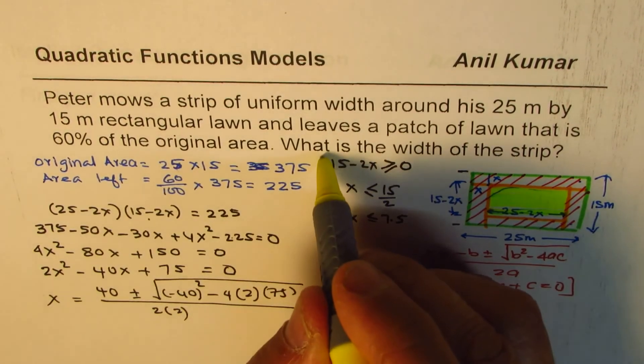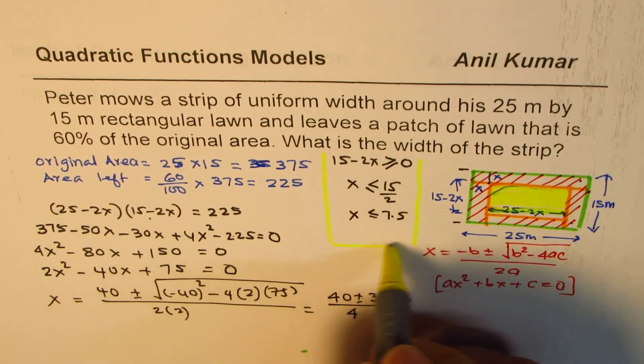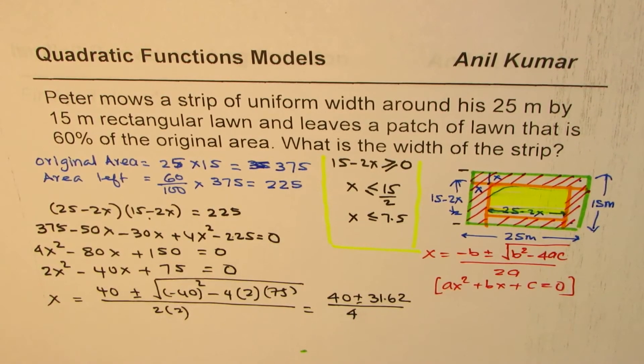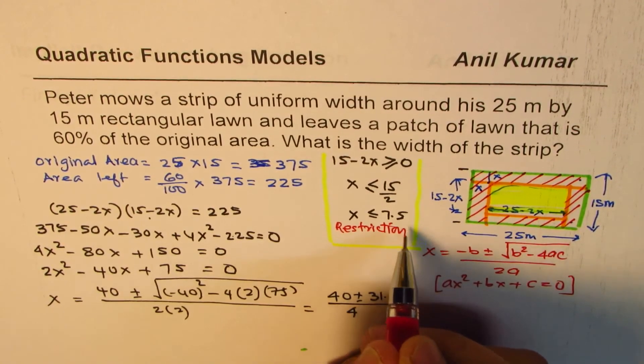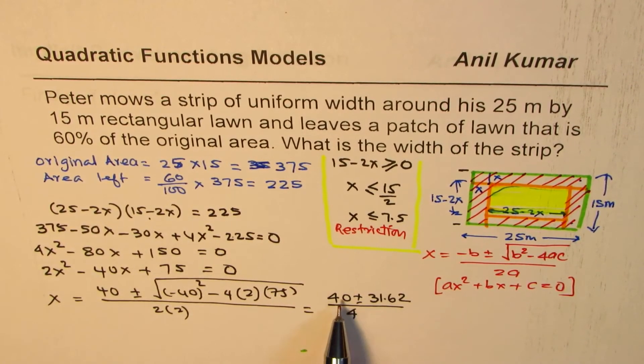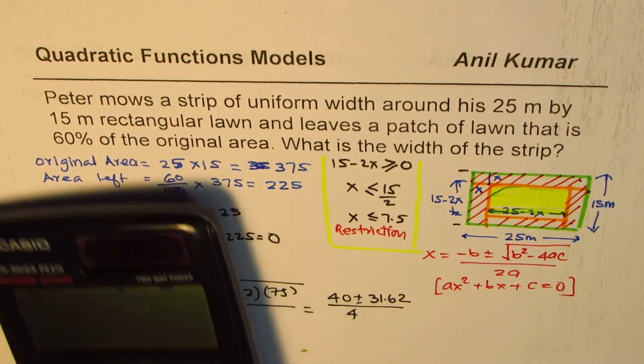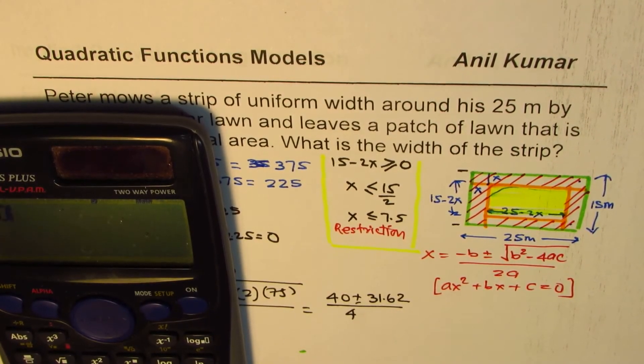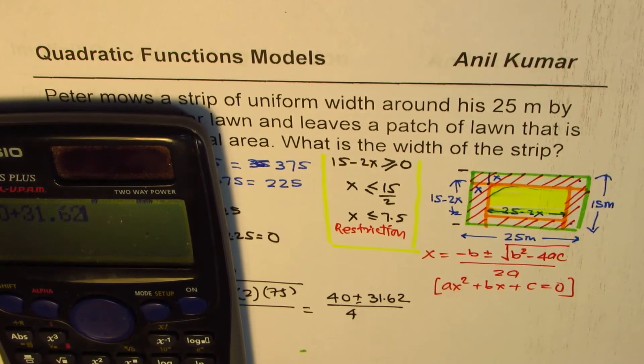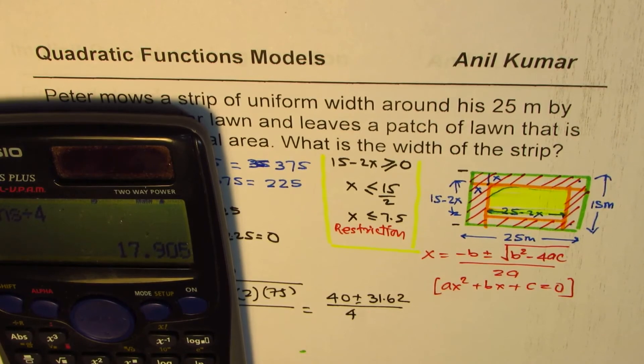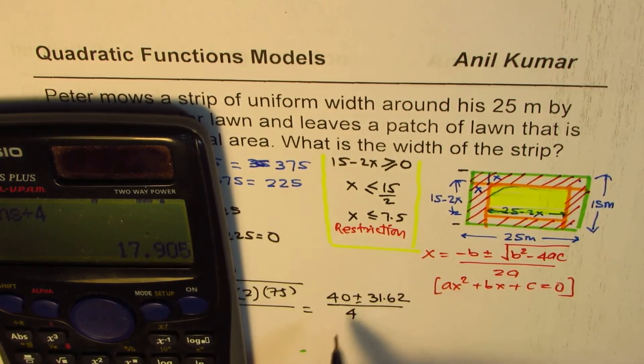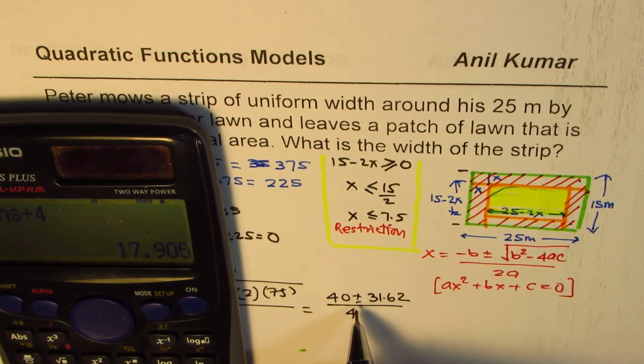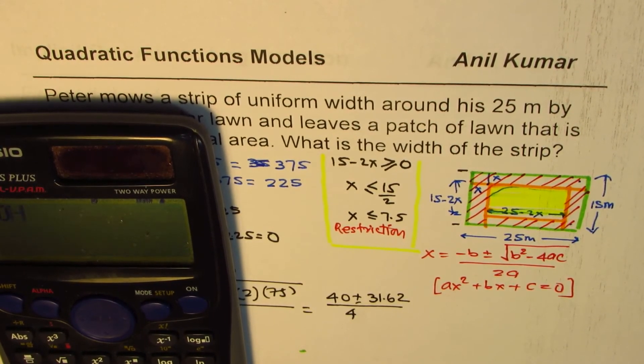Now if I add these two and divide by 4, what do I get? 40 plus 31.62 divided by 4 equals, in decimals, 17.90. So that is out of range. We'll only take this part which is negative. So we'll do 40 minus 31.62 divided by 4.